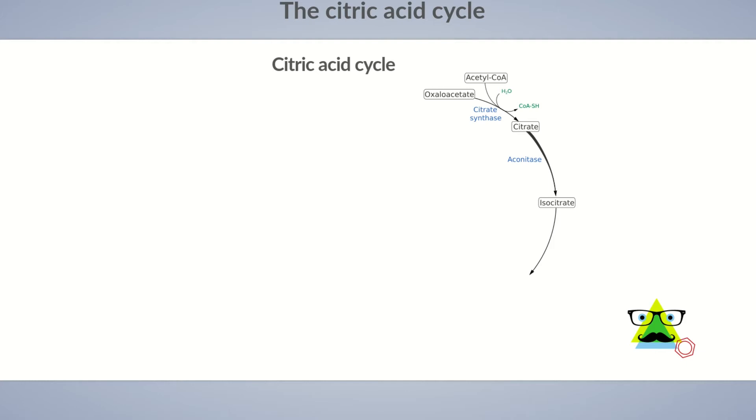While citrate is a tertiary alcohol, isocitrate is a secondary alcohol. It can be oxidized to a ketone, forming alpha-ketoglutarate in the third step of the citric acid cycle. The released electrons and protons are transferred to NAD+. The reducing equivalent NADH and H+ is formed, which is later used to make ATP in the electron transport chain. Let's take a note of it in our energy balance of the citric acid cycle.